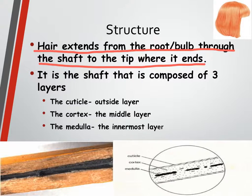Hair starts off as a root. If you've ever pulled your hair out from your scalp and looked at the end of it, you've seen a little white piece stuck on — that white piece is called the root or the bulb, and that's where your hair grows from. Hair extends from the root all the way through to the tip.